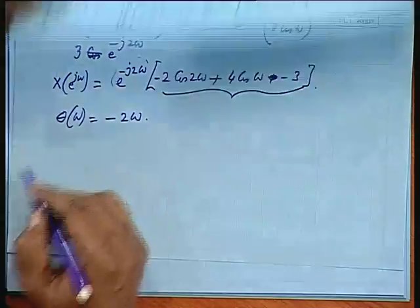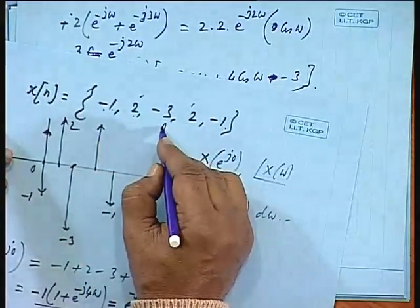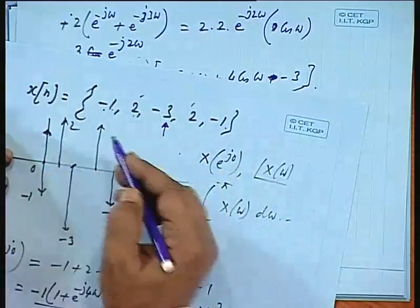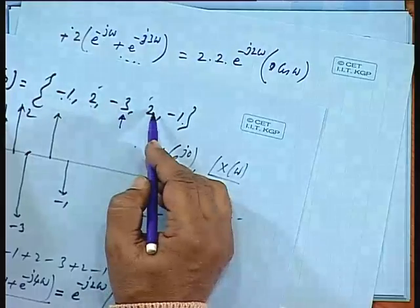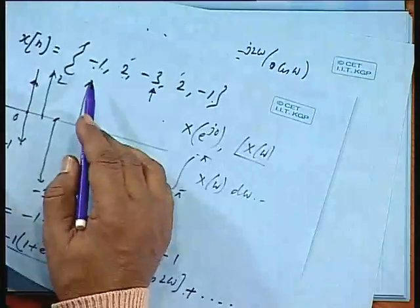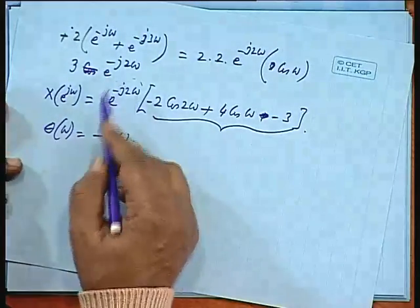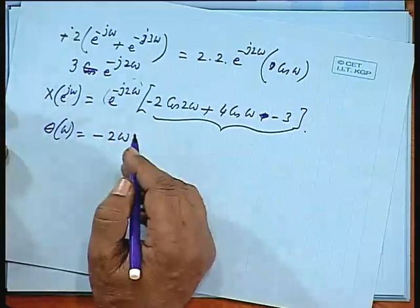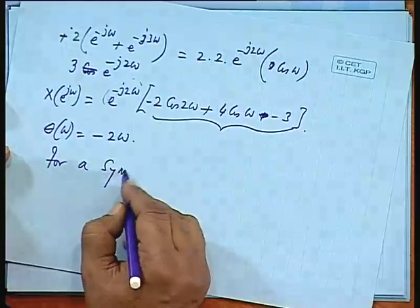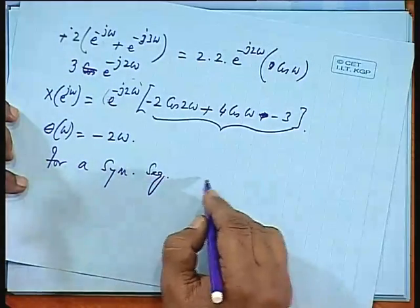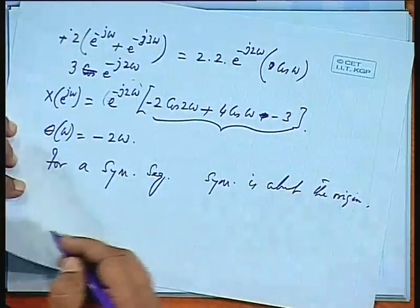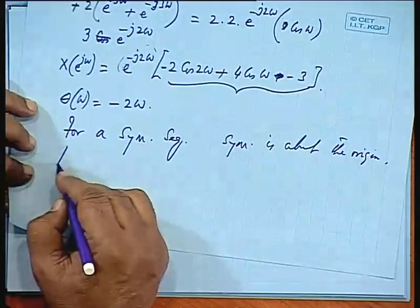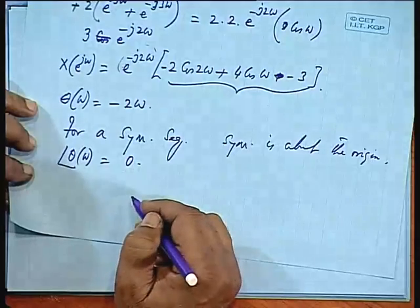Now if the sequence is symmetric about the origin instead of starting from a shifted point, then the central term is 3 times e to the power 0, and we have 2 times e to the power minus j omega and 2 times e to the power plus j omega. This gives a shift of the origin, so the term gets multiplied by e to the power plus j2 omega, and there is no angle associated. For a symmetric sequence with symmetry about the origin, angle theta equals 0.